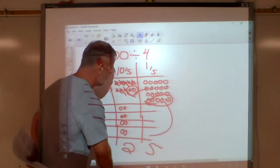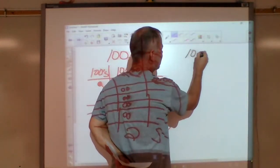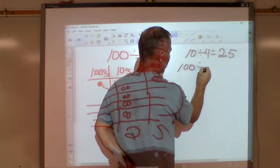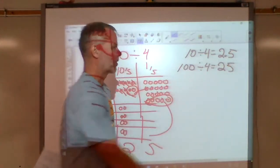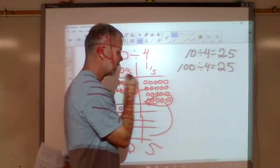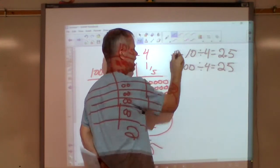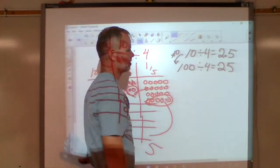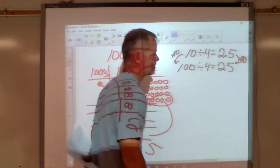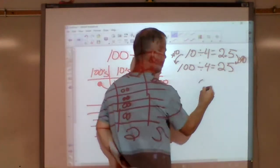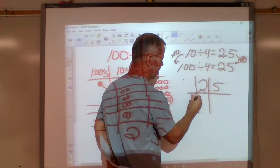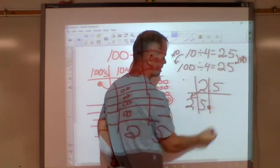Just as a side note: ten divided by four equals two and five tenths, and one hundred divided by four equals twenty-five. One hundred is ten times as big as ten, and twenty-five is ten times bigger than two and five tenths. If I put two and five tenths on the place value chart and multiply by ten, everything gets bigger — the decimal slides one place to the left.